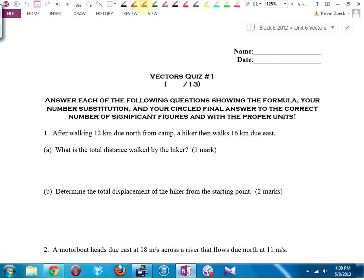After walking 12 kilometers due north from a camp, hiker then walks 16 kilometers due east. What's the total distance? Distance, scalar, 12 plus 16, 28 kilometers, one mark.